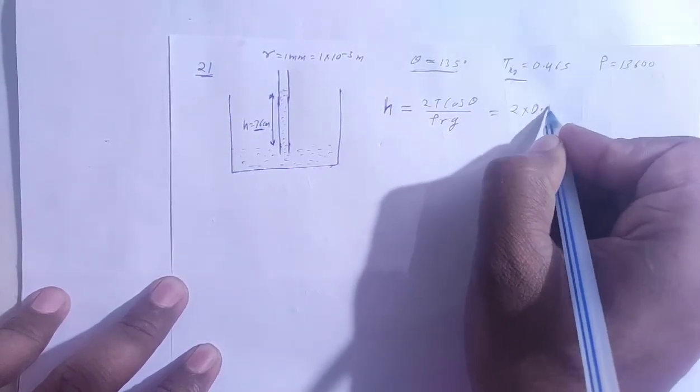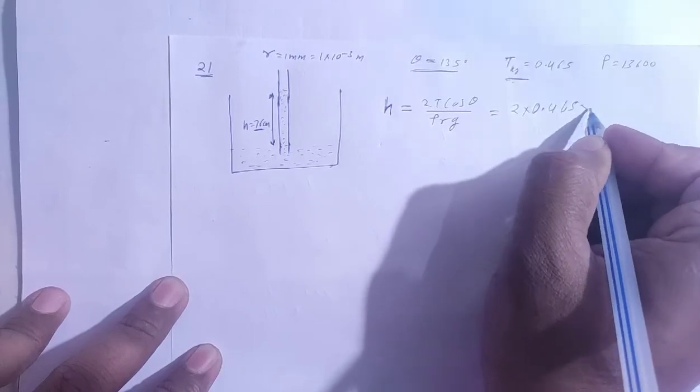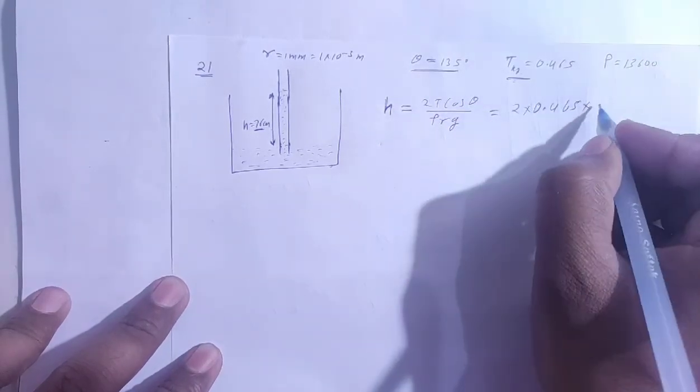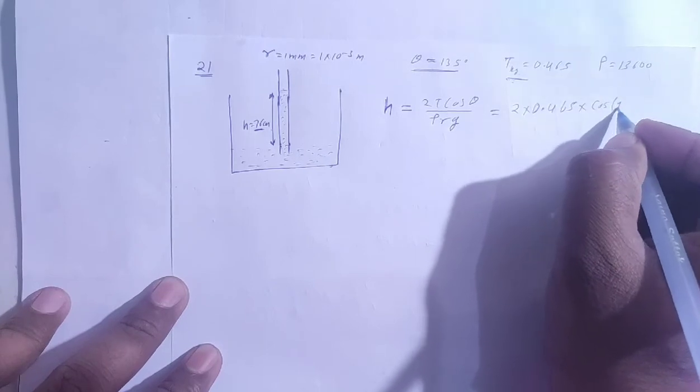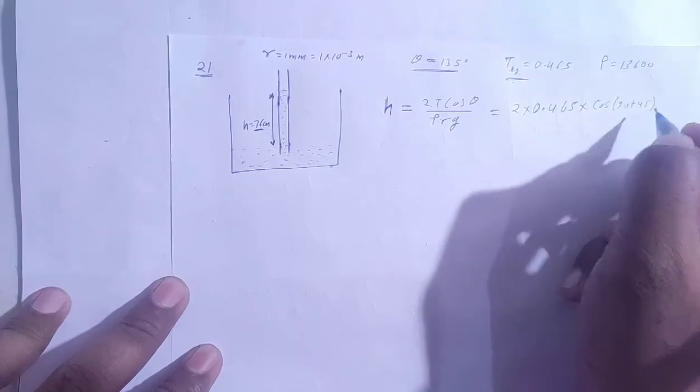So 2T is the surface tension, 0.465, and cos 135. Cos 135, cos 90 plus 45, 90 plus 45.